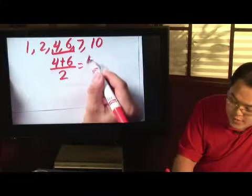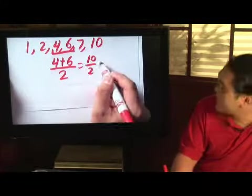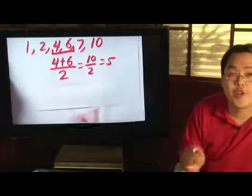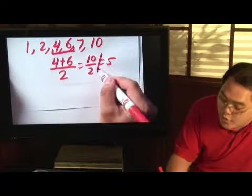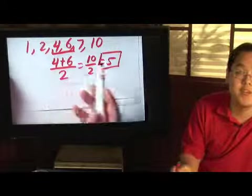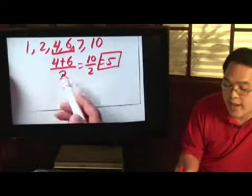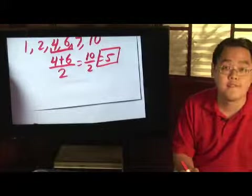Now 4 plus 6 is going to give you 10. Divide by 2, that's going to give you 5. The number that you find there is going to be your median. So if you have an even number of figures, take the middle two and average it out, and in this case you have 5.